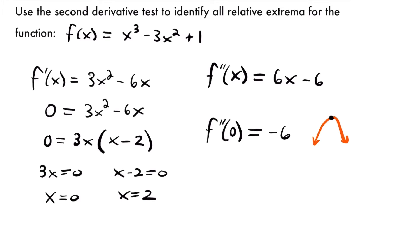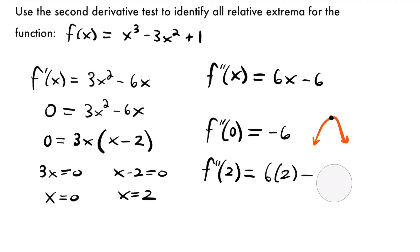Let's move on to x = 2 and plug that into our second derivative. f''(2) = 6(2) - 6, which gives us 12 - 6, equal to positive 6. Now in this case our second derivative is positive, which means we're going to have a function that is concave up, which means that critical value is going to be the relative minimum. So a positive value for our second derivative means we have a relative minimum.